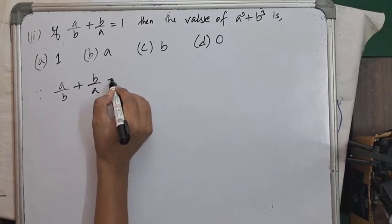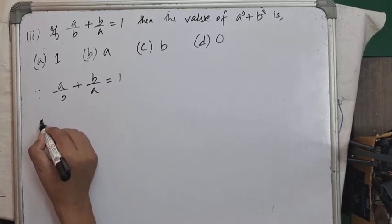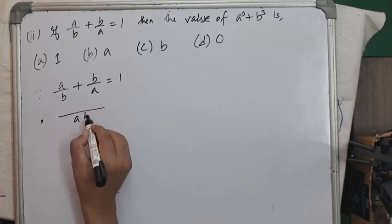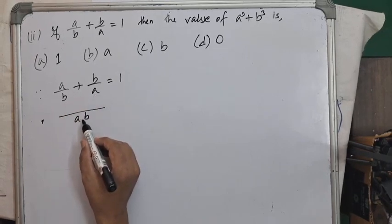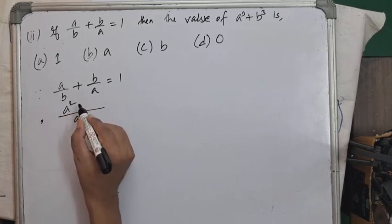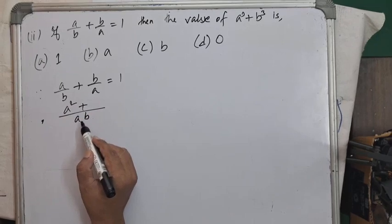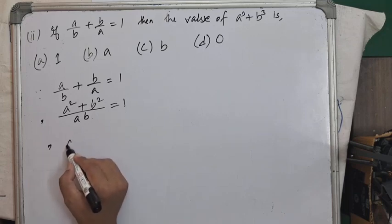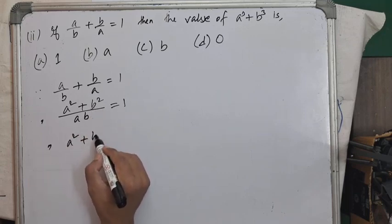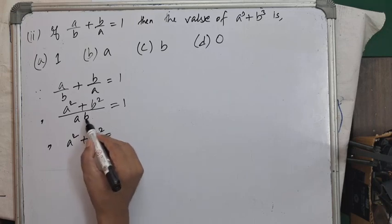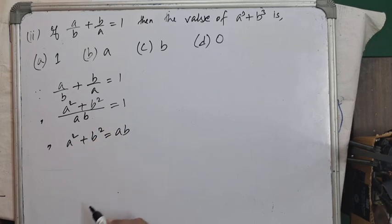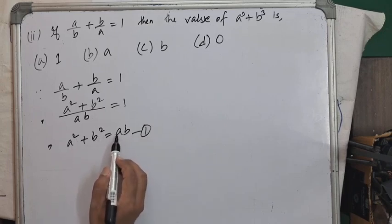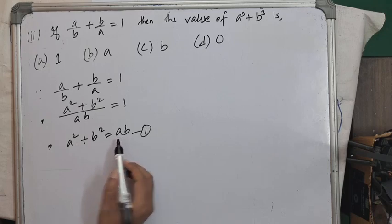Taking the LCM of the denominators a and b gives ab. So a²/ab + b²/ab = 1, which gives a² + b² = ab. Let's call this equation 1.